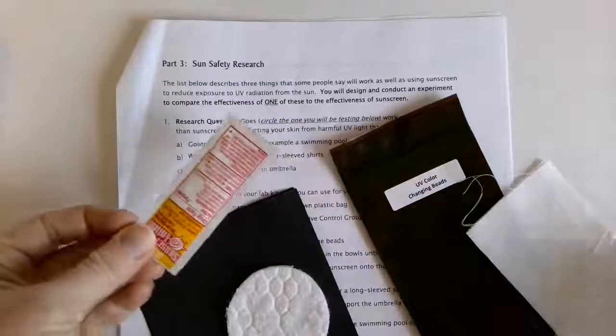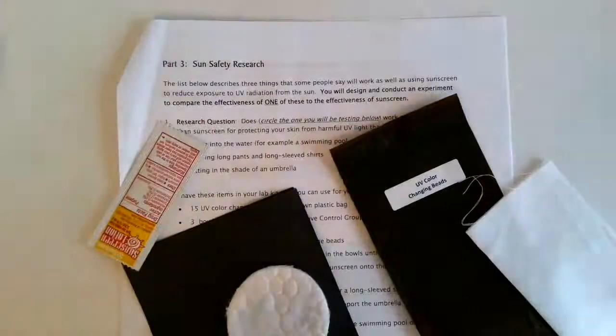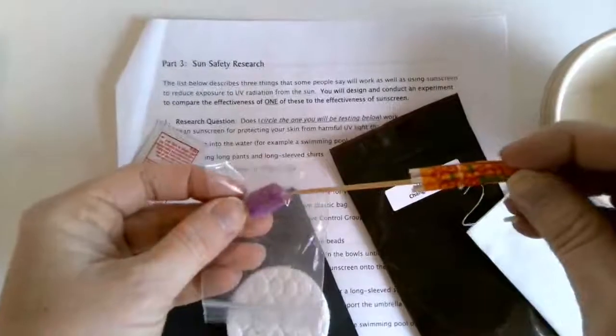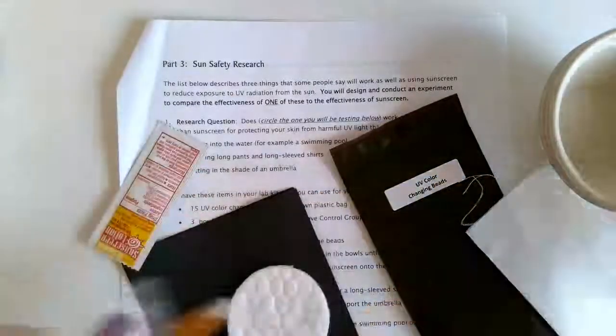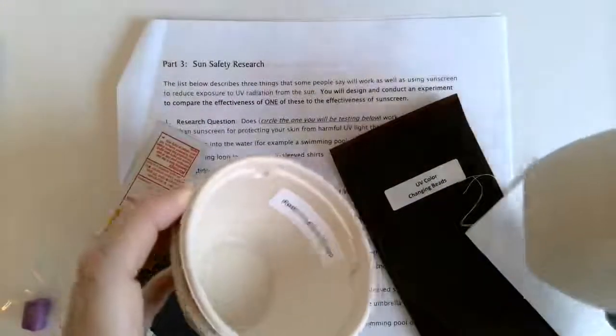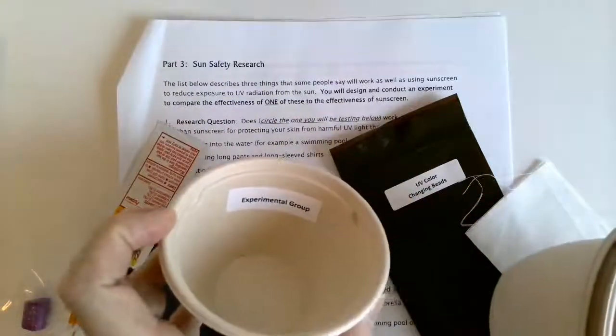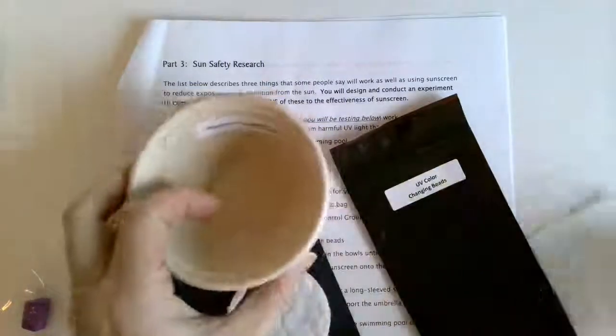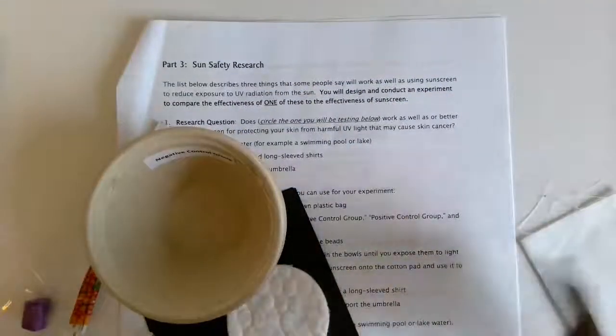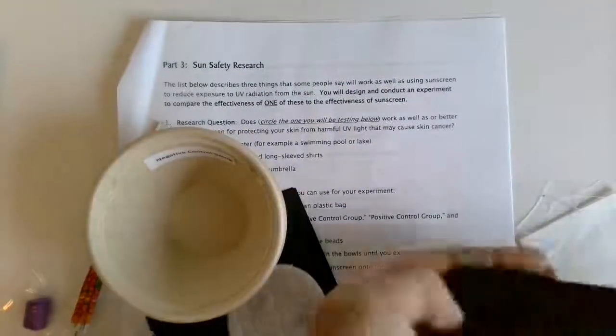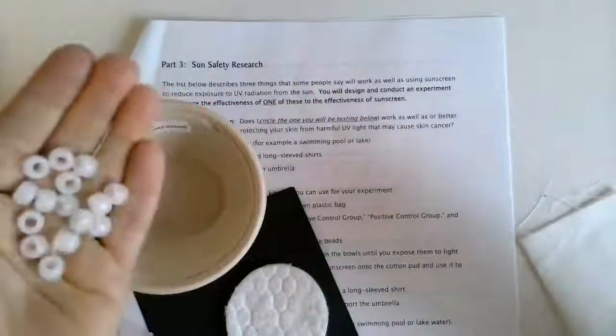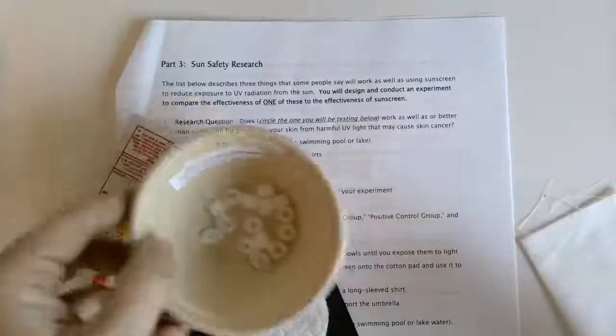You're given sunblock, you're given some clay - and that's if you want to use the umbrella that's included, you can stick it in the clay. You have different cups that say negative control group, positive control group, and experimental group. In the cups you'll put the UV colored beads.